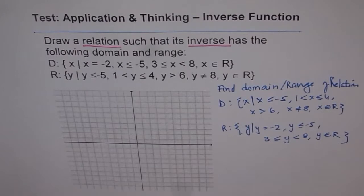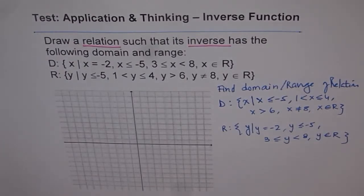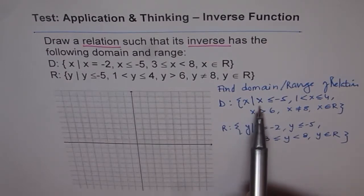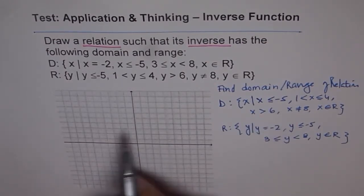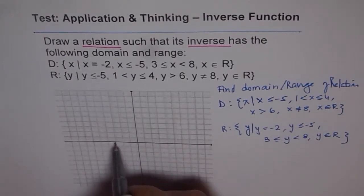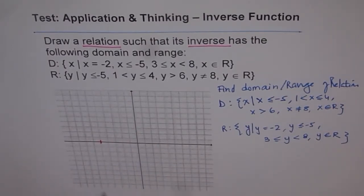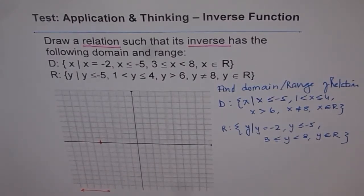Now that we have the domain and range of the relation, we need to sketch it. For such difficult problems, we will need colored pens to help. When the domain is x less than minus 5, let's say this is our graph paper. We mark minus 5 — the domain includes minus 5 and everything to the left on that side.